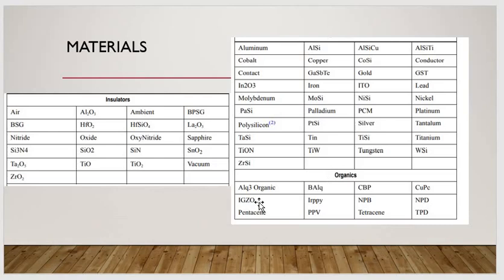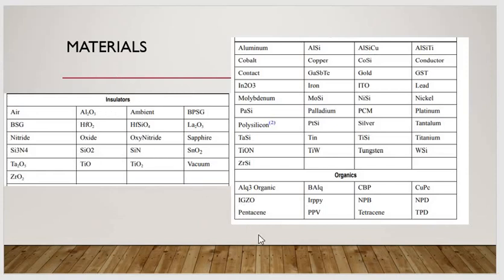Organic materials are also supported — for example, Alq3, BAlq3, CBP, CuPc, F8BT, IGZO, PPy, and others. Some organic materials may not be available by default, but you can define them using the user-defined material method and also define defects for them. Materials like pentacene, PVV, tetracene, and TPD are all available in SILVACO.